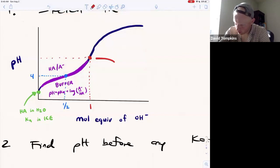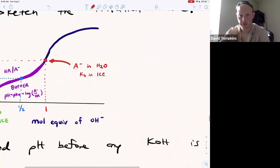When we get to the equivalence point, all of HA will be consumed, and we'll have A minus alone in water, which is now a weak base. At the equivalence point, that's going to be a Kb problem in an ice table, and we'll have to treat that differently.